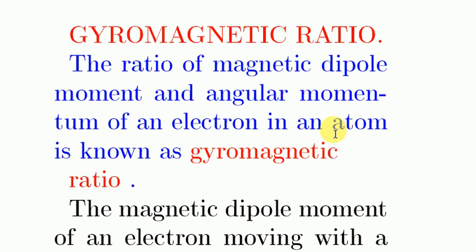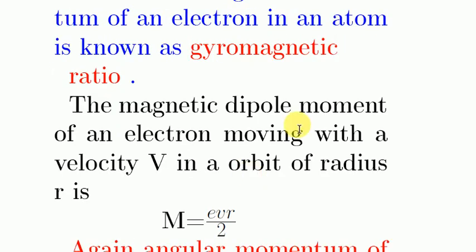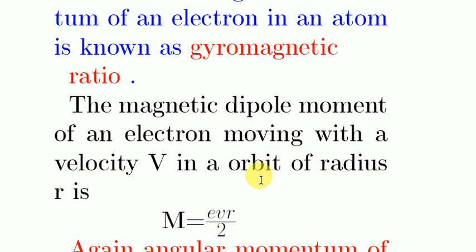This is the definition of gyromagnetic ratio and now we are going to discuss about its mathematical expression. The magnetic dipole moment of an electron moving with a velocity v in an orbit of radius r is M equal to evr by 2. Here, e is the charge of the electron, v is the velocity of the electron, and r is the radius of the orbit.